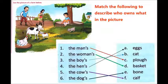Let's see — 'the man's'. In the picture, what does the man have? The man has a plow, so you will match 'man's' with 'plow'. Then 'the woman's' — the woman has a basket, so 'woman's basket'. Then 'boys'' — what do the boys have? A cat. So you will match boys with cat.